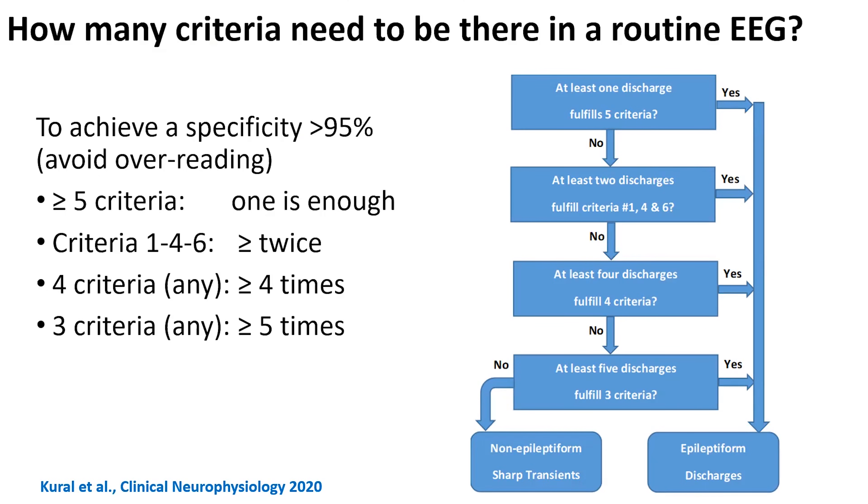So of course, if you see this archetypical spikes fulfilling five, six criteria, then you're on the safe side, even with one discharge per recording. Then you have this heavyweight combination of one, four, six. So only three criteria, but this specific combination of spiky, slow wave, voltage distribution, then you need two in a recording, especially because you want to avoid this so-called slow fuse transients, which can be tricky. So if you see just once in the recording, then it can still be a slow fuse transient. But if you see twice, it's almost never, very rarely can you see twice a slow fuse transient in the recording. And then if it's less typical, so it's only four criteria satisfied, then you must see at least four times in the recording. And then if it's three criteria, then at least five times in the recording. And you don't go lower than three.